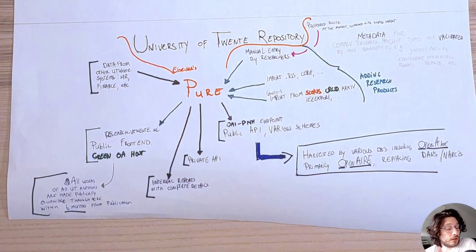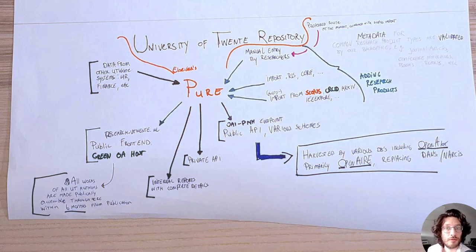First off, at the University of Twente, we have a repository like many universities. It's also a research information system using Elsevier's Pure. The main way that data gets into their research output is that researchers who produce the research products add them themselves, mostly by getting metadata from Scopus. So they don't have to manually enter everything themselves, and then they enter it into the system. This is then in turn validated, checked by our metadata specialist, our back office from the library. There are many other ways to add data to the system, but this is where most of our data comes from.